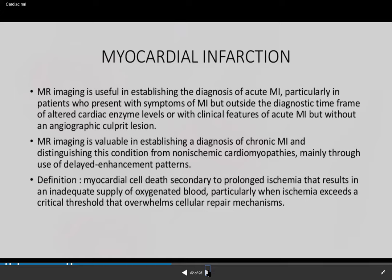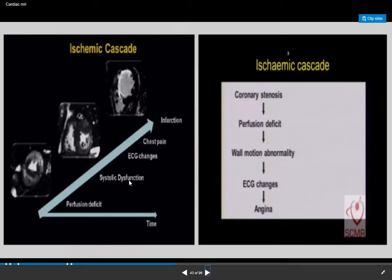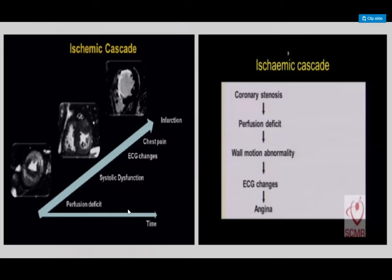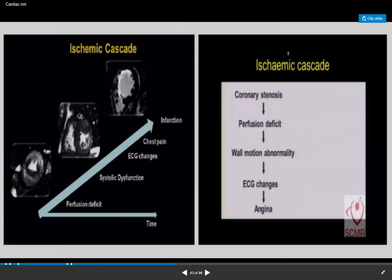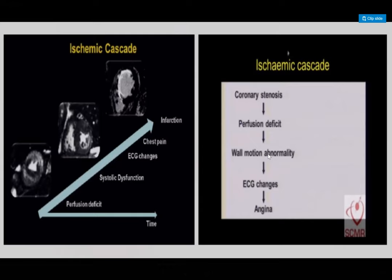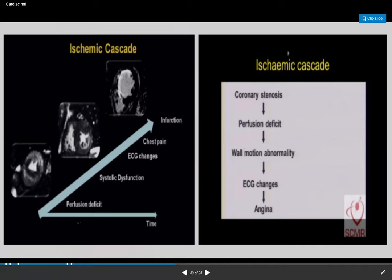In adult cardiac MRI, it's mainly used for looking at myocardial infarction. On MRI you can look at chronic MI — in chronic MI, fat replaces the infarcted myocardium, and MRI is very good at detecting fat. Regarding the ischemic cascade: perfusion defect first, then diastolic dysfunction, then ECG changes, then chest pain, then infarction — though the sequence isn't always the same.